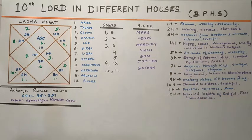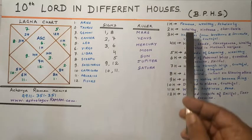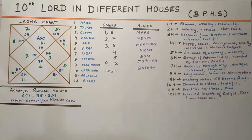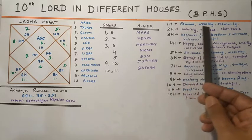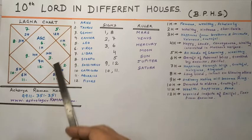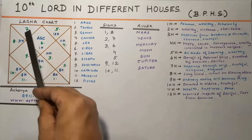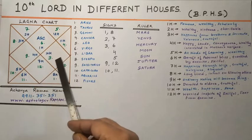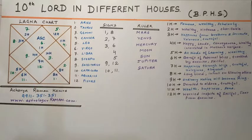If the 10th Lord is placed in the 1st house, the native will be scholarly, famous, and a poet. He will incur disease in boyhood but will be happy later on, and his wealth will be increasing day by day. If the 10th Lord is placed in the 2nd house, the native will be wealthy.